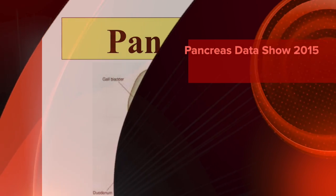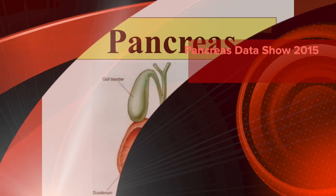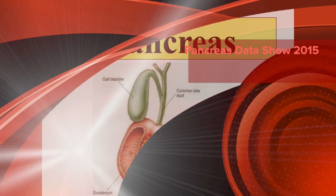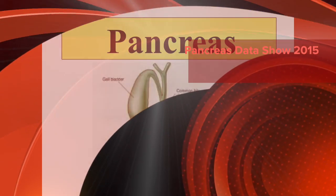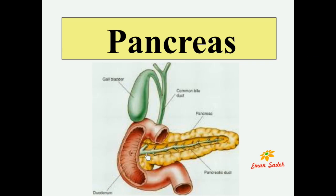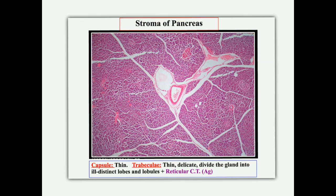Bismillah ar-Rahman ar-Rahim. This is a description of the data shown for the pancreas. This gland is a compound tubular gland present in the concavity of the second part of the duodenum. As any gland, it is formed of stroma and parenchyma.